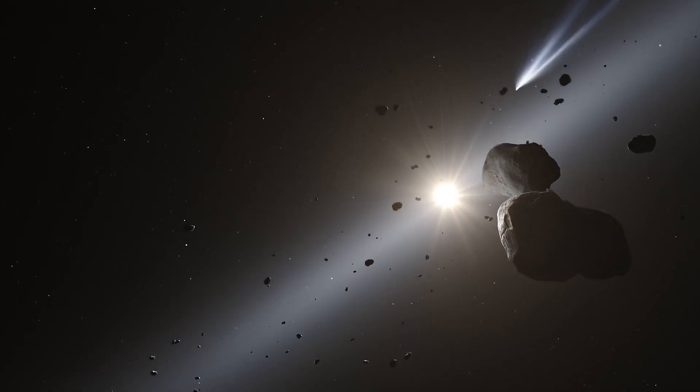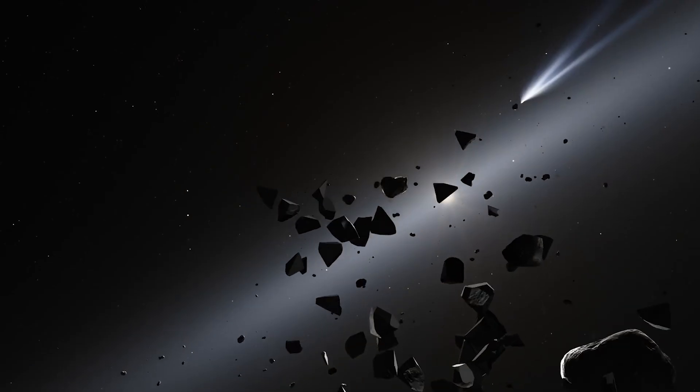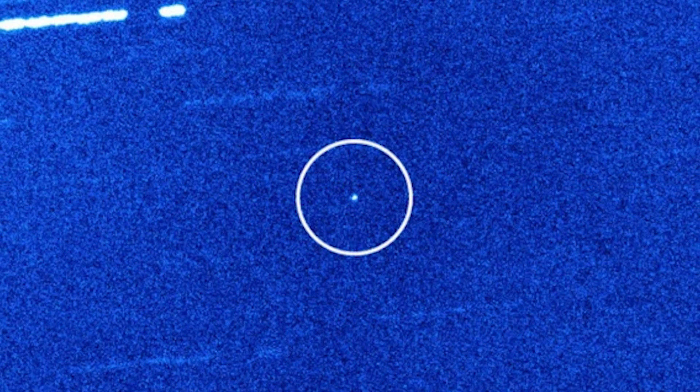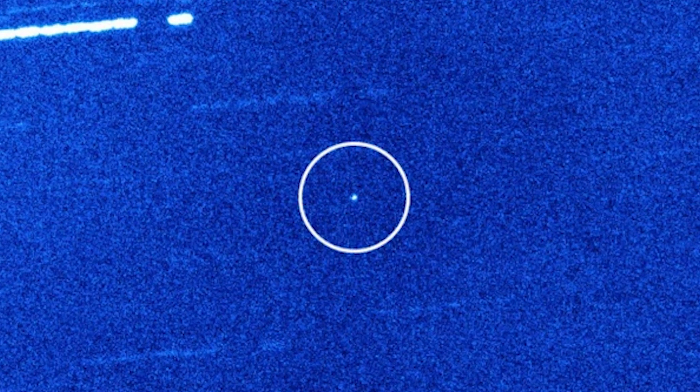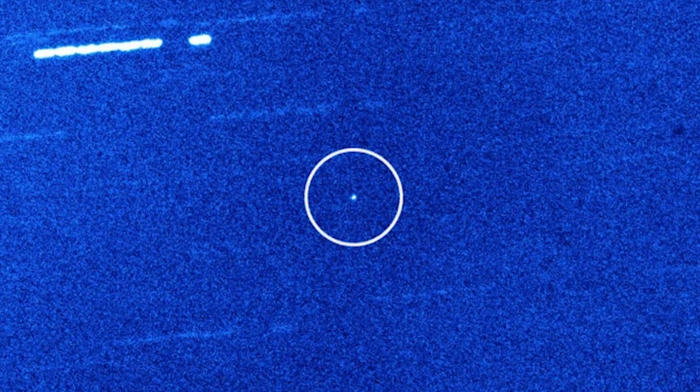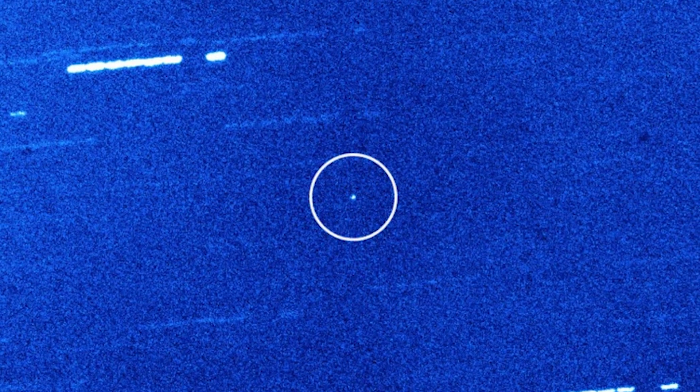However, Oumuamua stood out by lacking a coma, which is the atmosphere and dust that surrounds comets as they break apart. Several telescopes focused on it for three nights to try to find more about it before it completely disappeared. Although there is no tangible evidence to directly support Oumuamua's extraterrestrial origins, the exceptional characteristics of this object generate intriguing theories and imaginative possibilities.